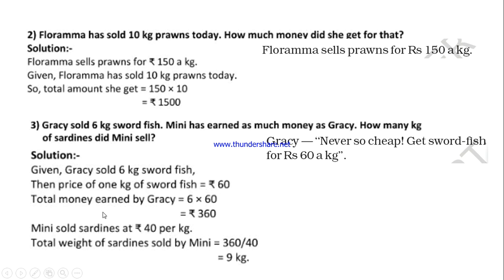So the total money earned by Gracie is Rs. 360. The next sentence says Mini has earned as much money as Gracie. How much money did Gracie earn? Rs. 360. The same amount is received by Mini also. So Mini sold sadden fish, and Gracie sold swordfish. By selling 6 kg of swordfish, Gracie earned Rs. 360. Likewise, Mini also earned the same amount, Rs. 360.